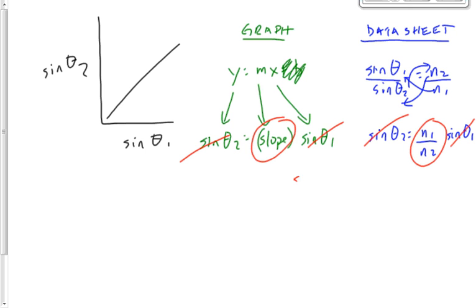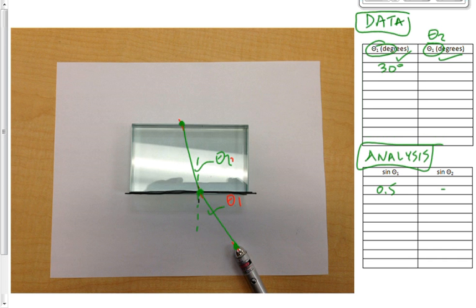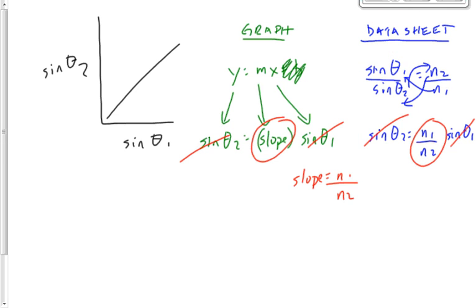Let's go back to this for a second. What are we solving for here? The purpose of this was to find the index of refraction of the glass. Is the glass n1 or is it n2? Air is n1. We're going from air and we know the index of refraction of air already is 1.00. We're solving for n2. So let's go back to this again. We know the value of n1 is 1.00. We just found the value of the slope. We're solving for n2.